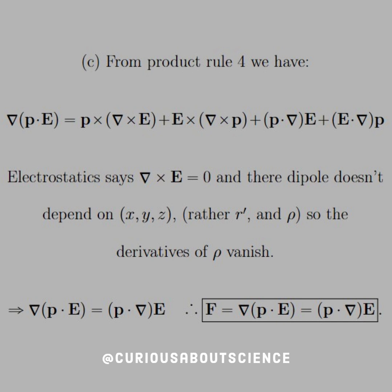The curl of E equals zero, and there isn't a dipole, and their dipole doesn't depend on X, Y, or Z, rather, r prime and ρ, so the derivatives of ρ vanish.